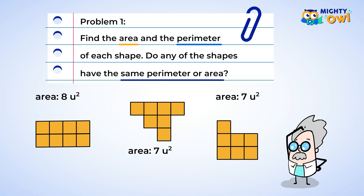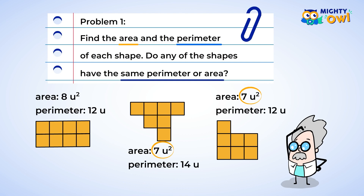We already found out that two shapes have the same area of seven square units. Now let's find out if any of our shapes have the same perimeter. The first shape has a perimeter of 12 units. The next shape has a perimeter of 14 units. Look at that — two of the shapes have the same perimeter, but not the same area. And the two shapes that had the same area don't have the same perimeter. That's super interesting. What a great discovery you made!